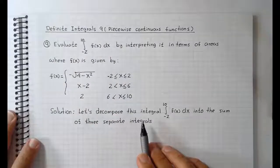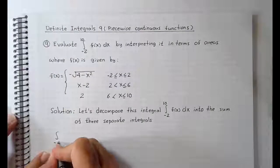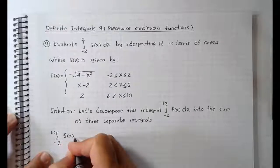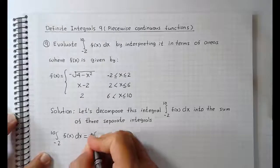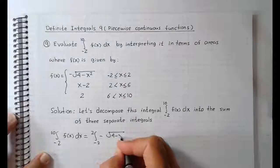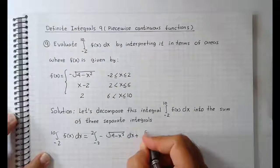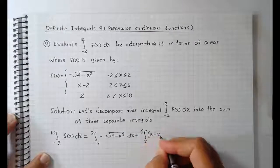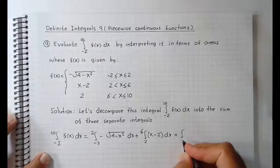Let's decompose this integral into the sum of three separate integrals. The integral from minus 2 to 10 of f dx is equal to the integral from minus 2 to 2 of minus root of 4 minus x squared dx, plus the integral from 2 to 6 of x minus 2 dx, plus the integral from 6 to 10.